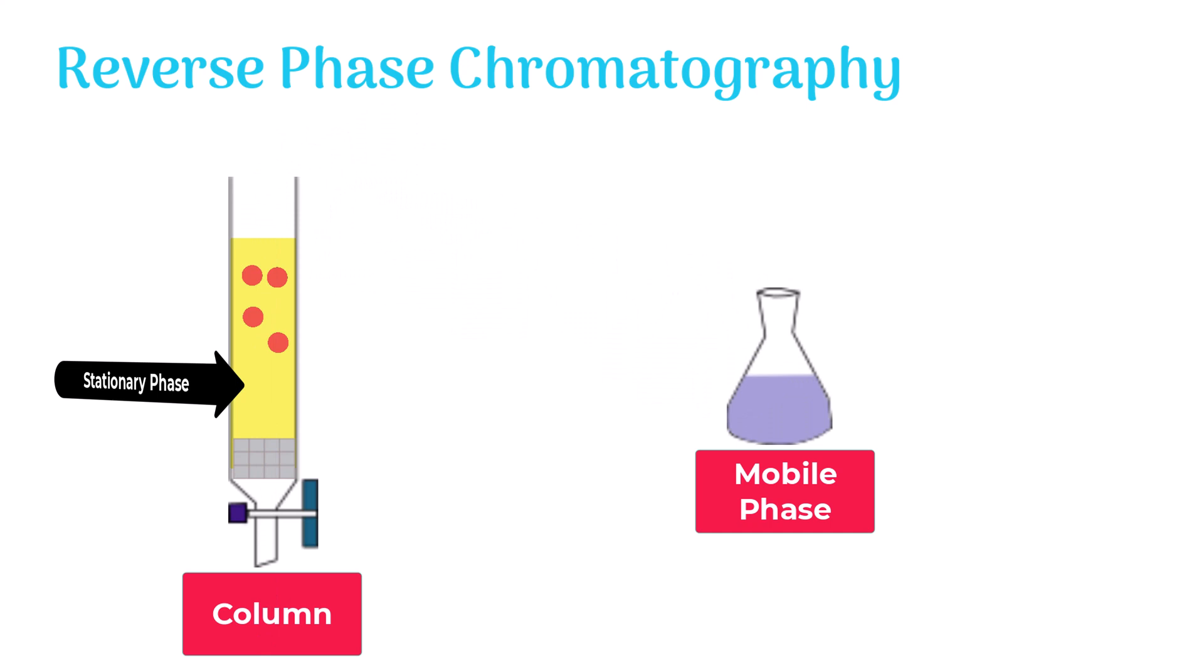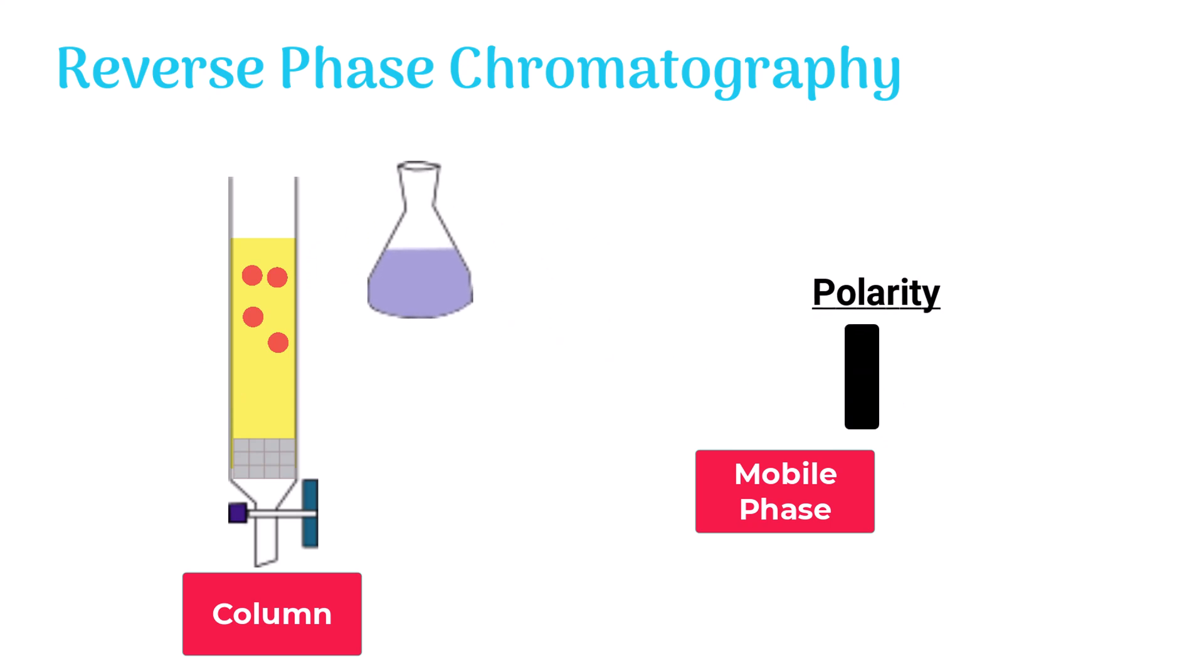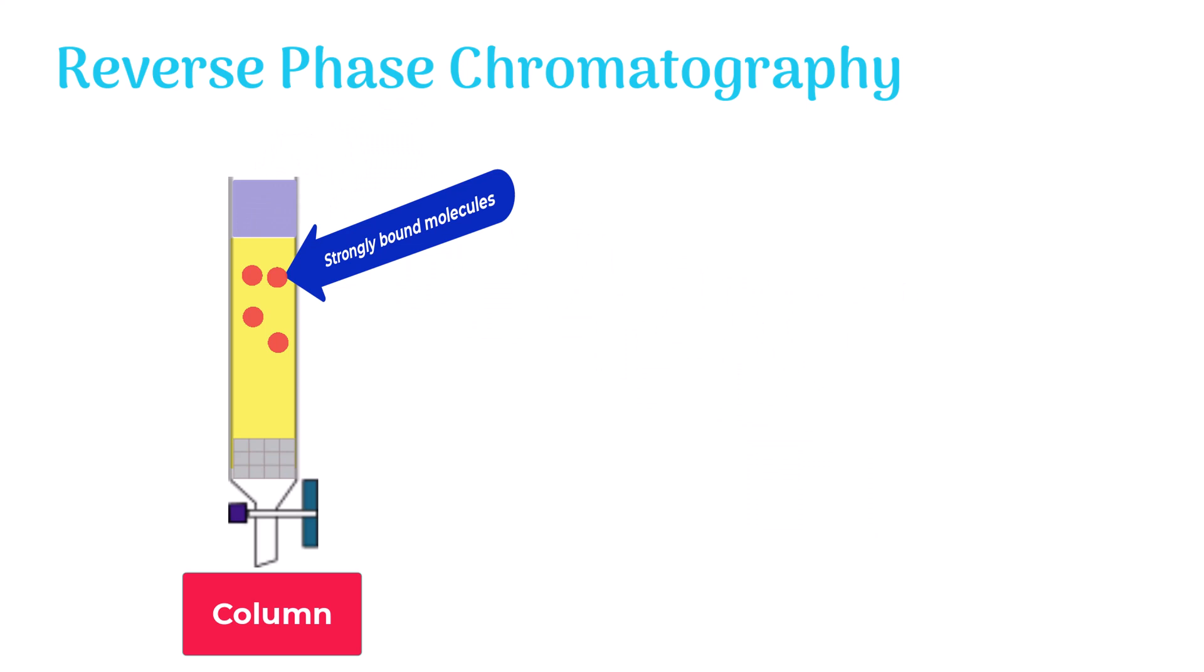Now, to remove the strongly bound molecules, we further increase the polarity of the mobile phase. Next, we pour in the mobile phase, which washes the bound molecules from the column.